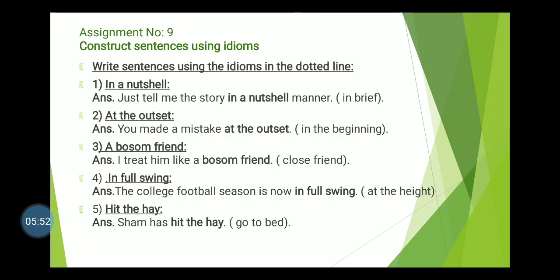Let us discuss idioms — write the sentences using idioms in the dotted lines. First: 'In a nutshell' means 'in brief.' Example: Just tell me the story in a nutshell. Second: 'At the outset' means 'in the beginning.' Example: He made a mistake at the outset, meaning at the beginning. Third: 'A bosom friend' means 'close friend.' Example: I treat him like a bosom friend.